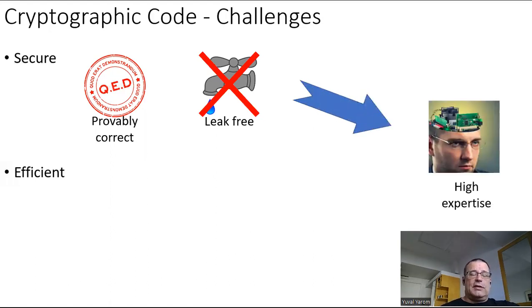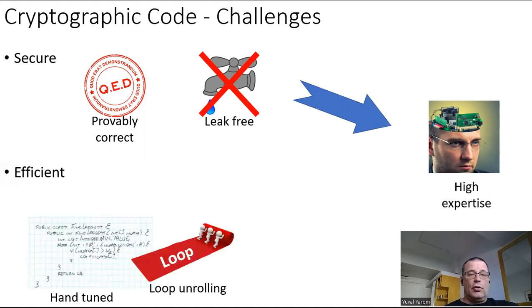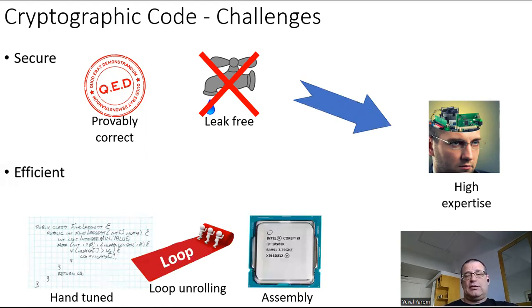For efficiency, because we want the code to be efficient, high performance, code is typically hand-tuned. It includes techniques such as loop unrolling and other optimization techniques, and it is in many cases written in assembly. Again, requiring high expertise, and unfortunately, expertise comes with a price.